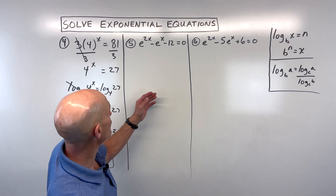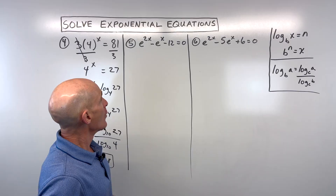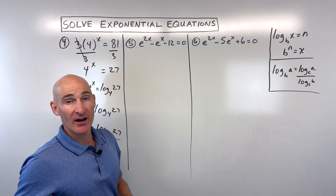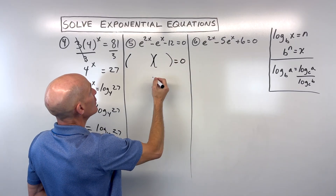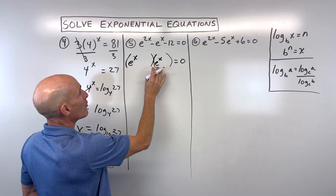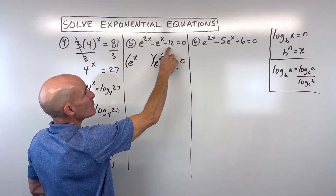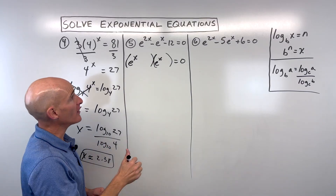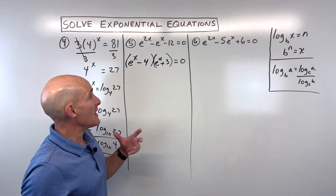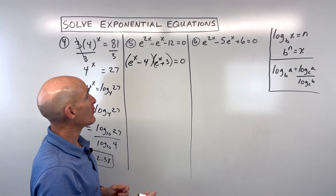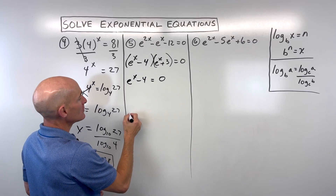Let's go to number 5. This one's different — we've got exponents on both sides. This kind of looks like a quadratic equation that we can factor. We can factor it into two binomials: e to the x times e to the x gives e to the 2x when you add exponents with the same base. What two numbers multiply to negative 12 but add to negative 1? That's negative 4 and positive 3. Now we have it factored and can use the zero product property: e to the x minus 4 equals 0 and e to the x plus 3 equals 0.